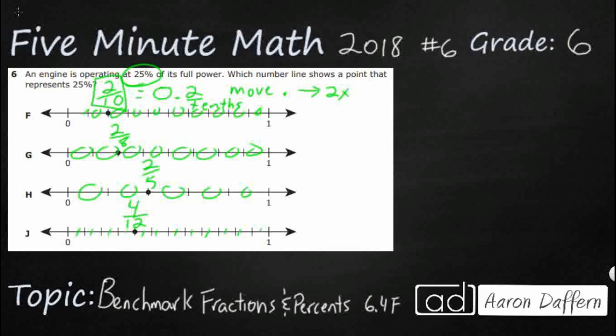When we change from a decimal to a percent, you simply move the decimal point to the right two times. From fraction to percent, you have got to go first from a fraction to a decimal, then a decimal to a percent. So this is going to be 0.2, so that is 20%. We are close, but that is not going to be what we are looking for here.